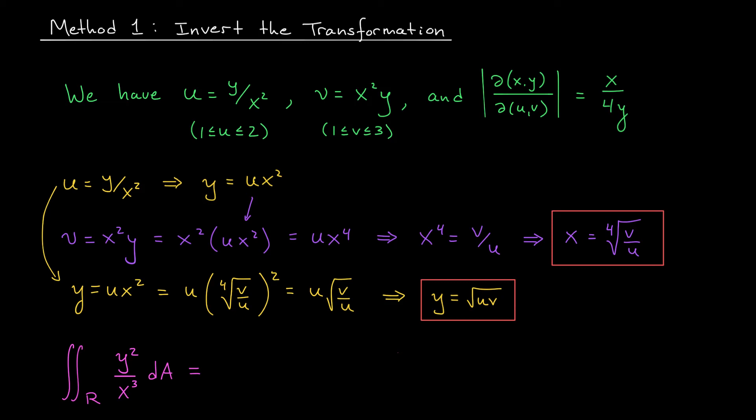When we convert to u's and v's, we have the integral from 1 to 2 times the integral from 1 to 3. Our integrand is going to be the square root of u v squared. That's our y. I'm going to replace x with the 4th root of v over u cubed, and then finally, I have the absolute value of the Jacobian, the 4th root of v over u divided by 4 times the square root of u v.